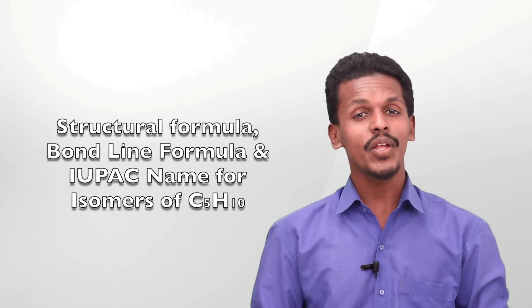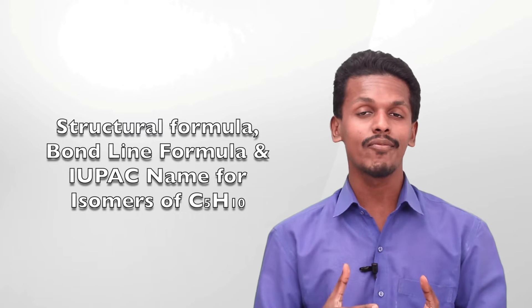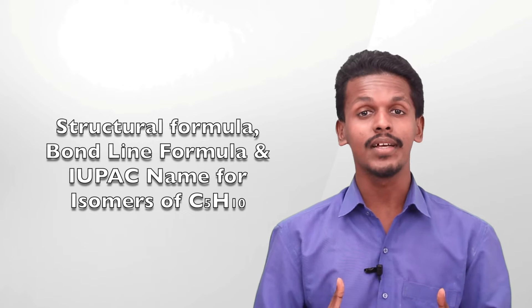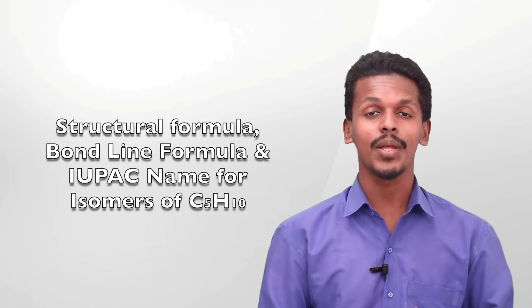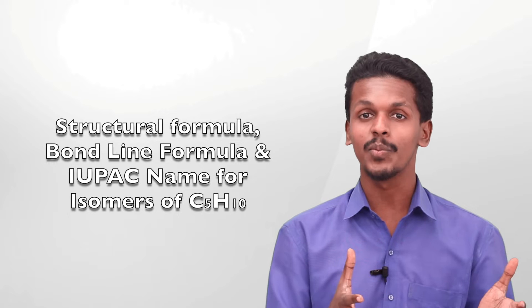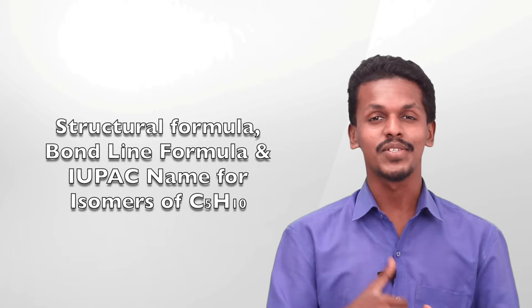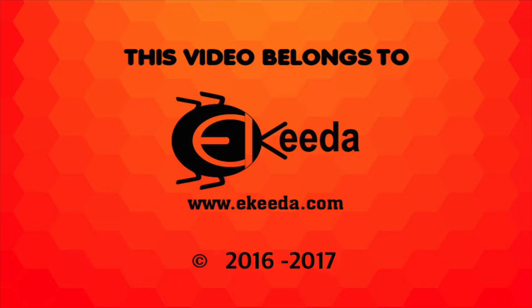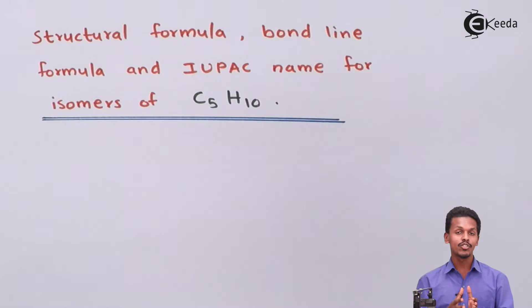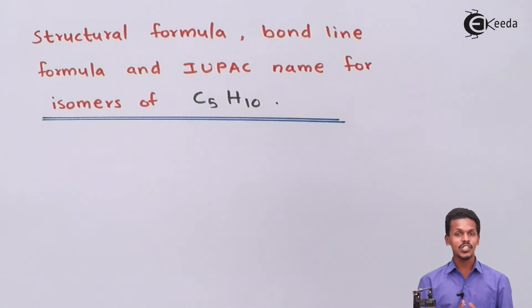Hello friends. Now we are going to discuss the structural formula, the bond line formula, and the IUPAC name of the isomers of the molecular formula C5H10. We will draw all the different kinds of isomers possible for C5H10.